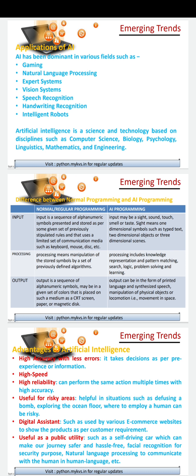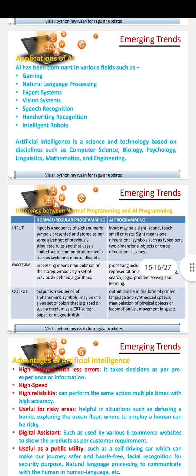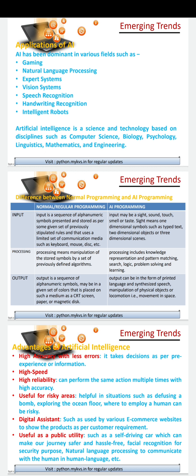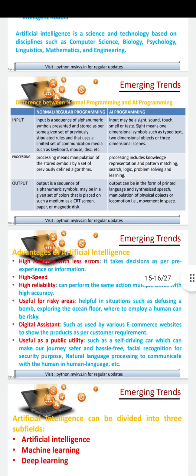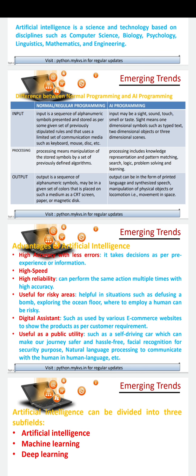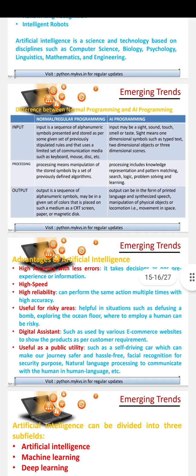There are so many phones available in the market where the eye retina is used to open the phone. So that is another example of artificial intelligence. Artificial intelligence is a science and technology based on disciplines such as computer science, biology, psychology, linguistics, mathematics, and engineering. So AI is a mix of these disciplines.